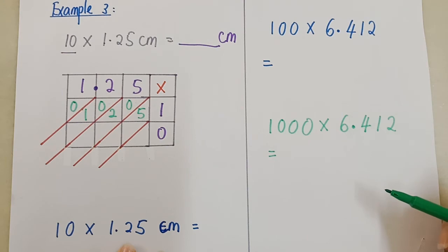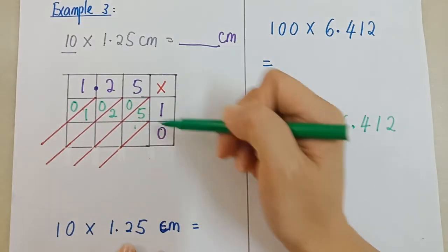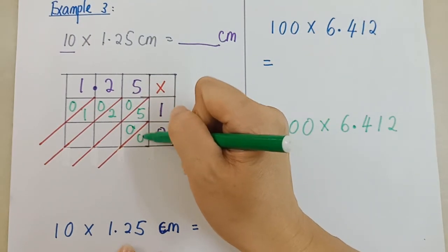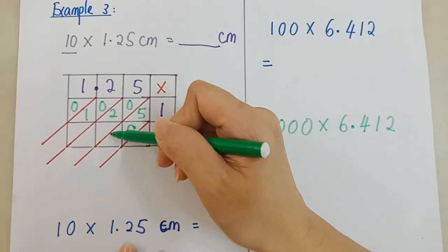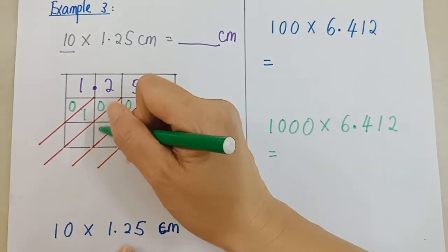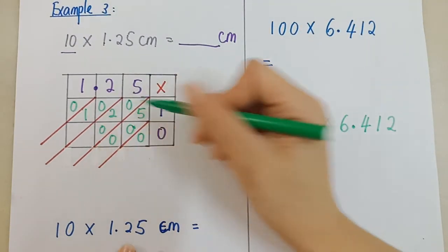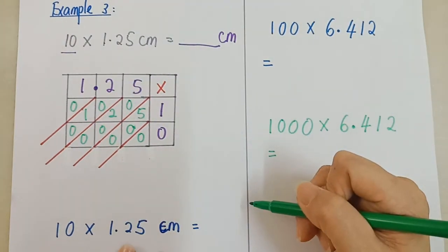Understand? Next, this one. 5 times 0. You get 0 kan? Kosong. Sifir-sifir. For this one, 2 times 0. Also, you get 0, right? 0, 0. This one. 1 times 0. Also, 0, 0.